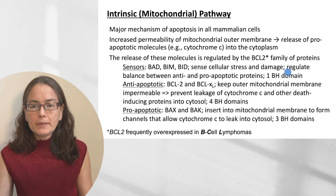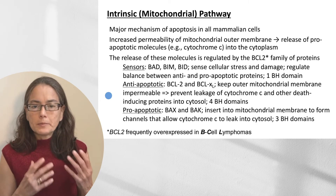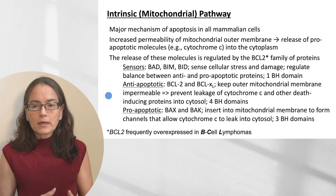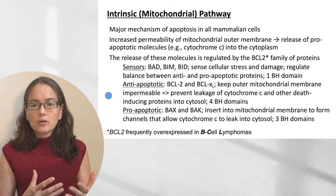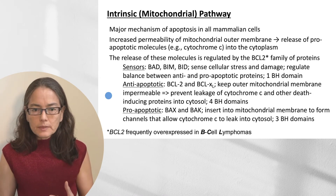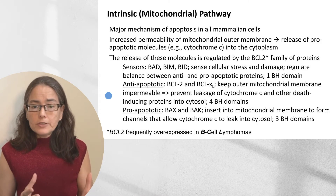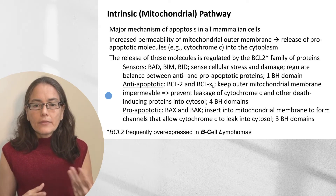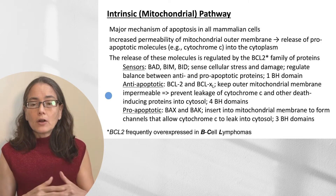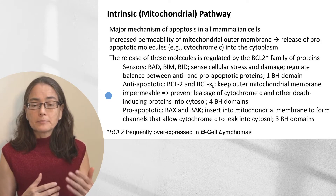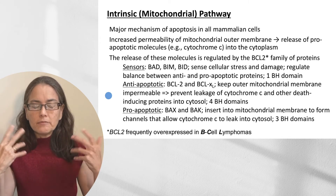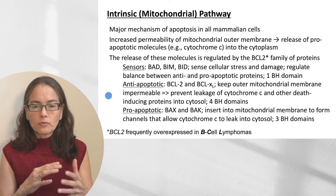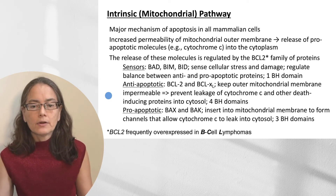The classic anti-apoptotic protein BCL2 keeps the outer mitochondrial membrane impermeable, preventing leakage of cytochrome C and other death-inducing proteins into the cytosol. The pro-apoptotic proteins — examples being BAX and BAK — insert into the mitochondrial membrane, forming a channel that allows cytochrome C to leak into the cytosol. These proteins are found on the outer mitochondrial membrane, and can also be found in the cytosol and in the endoplasmic reticulum membrane. This is really a membrane process.